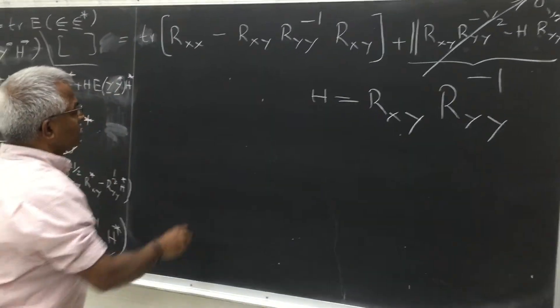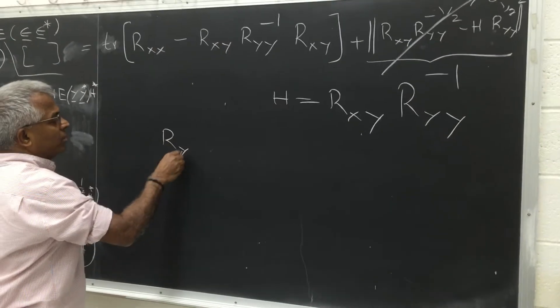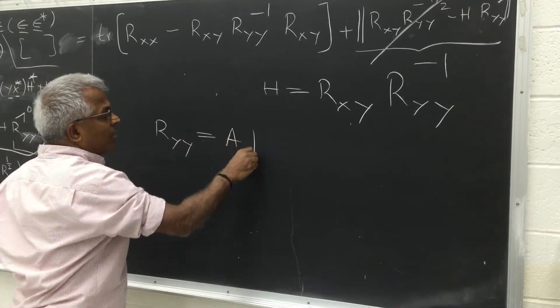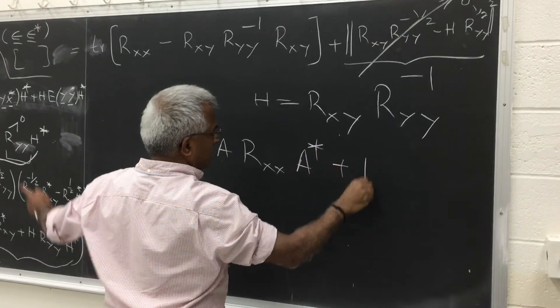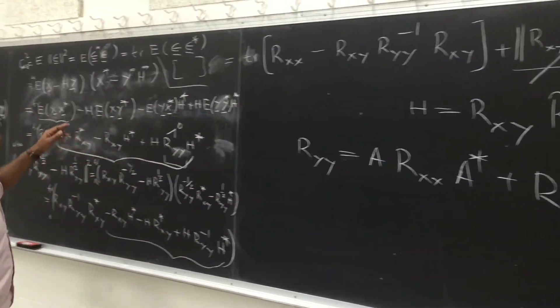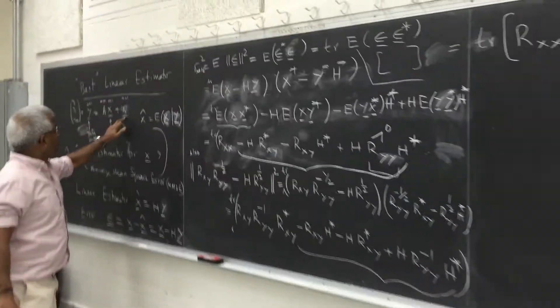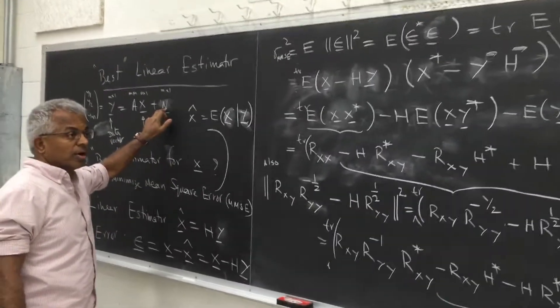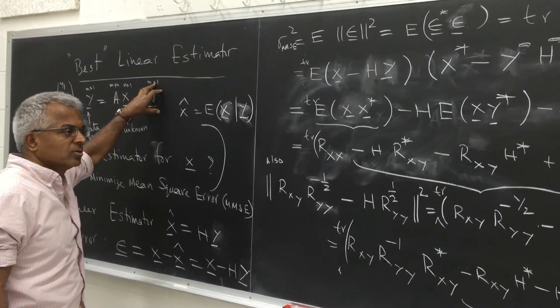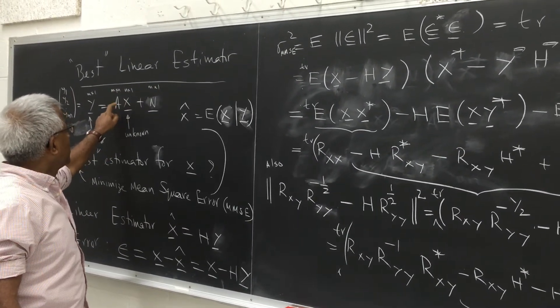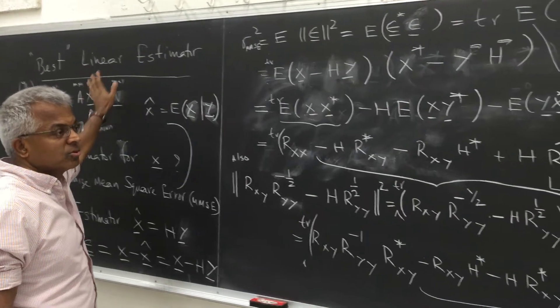So in this case, Rxy would be A Rxx, A transpose, plus R_nn, because y is given to be AX plus N. Signal and noise are uncorrelated, so the covariance matrix of this plus the covariance matrix of this. So this is A expected value, XX transpose, A transpose.